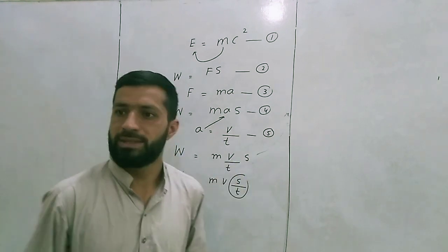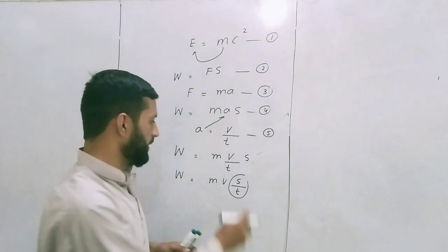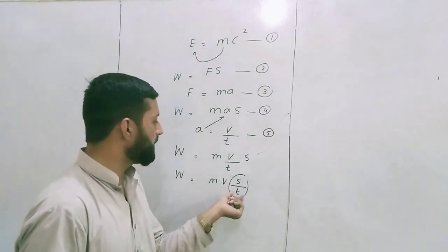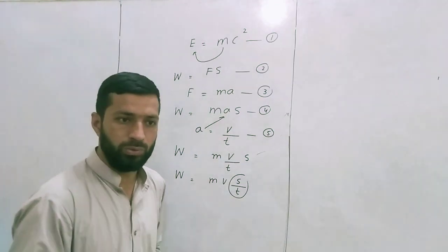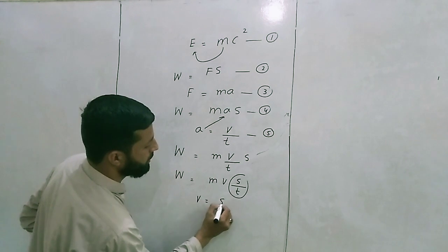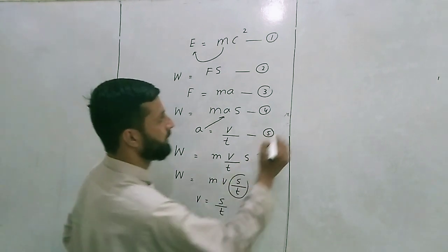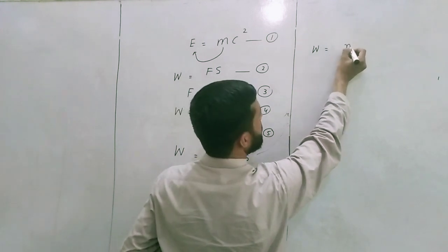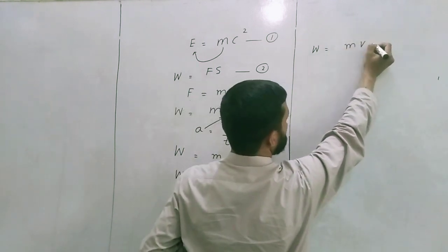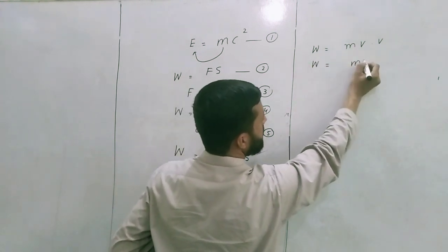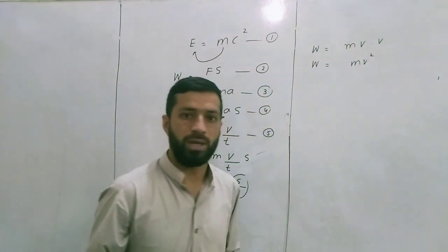This s divided by t in this equation is actually displacement divided by time, and displacement divided by time is equal to velocity. So here we can write v equals s divided by t. So the equation will become W equals mv multiplied by v. So the equation will become W equals mv squared.